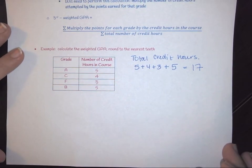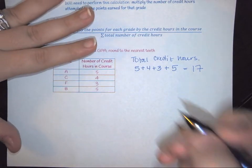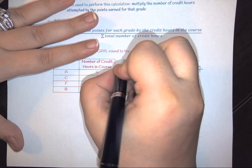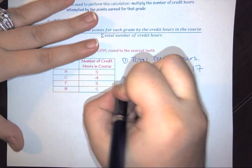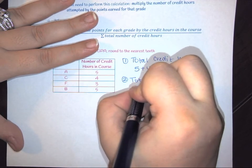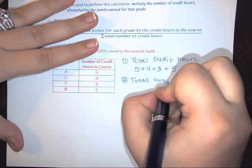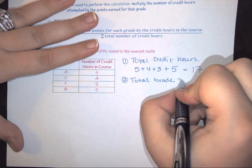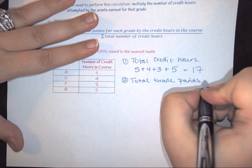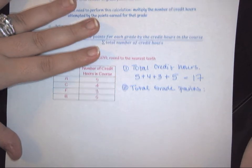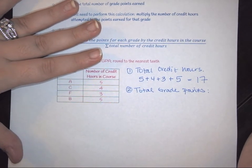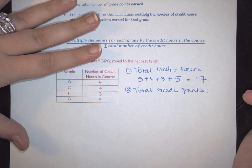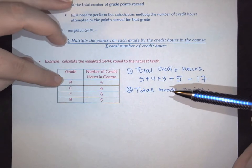Now the next thing that you need to do is calculate your total grade points. So we need to find the total grade points. The way that we do that is we have to figure out how much each grade was worth.